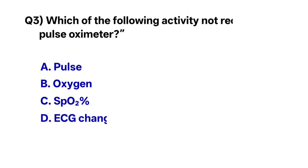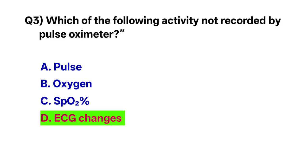Question number three: Which of the following activity is not recorded by a pulse oximeter? The correct option is ECG changes.